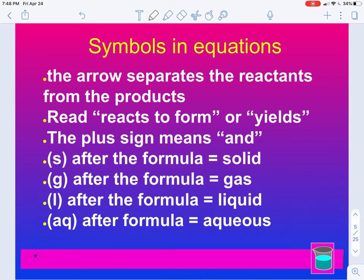So there are going to be some important symbols in the word equations that will help you. First, you have an arrow. Remember, that's your yield sign. Then you're going to read things for the arrow, such as reacts to form or yields. When you see a plus sign, it means the word and. Then we also have these symbols that you might find after the formula. So S stands for solid, G stands for gas, L stands for liquid, and AQ stands for aqueous solution. This is dissolved in water.